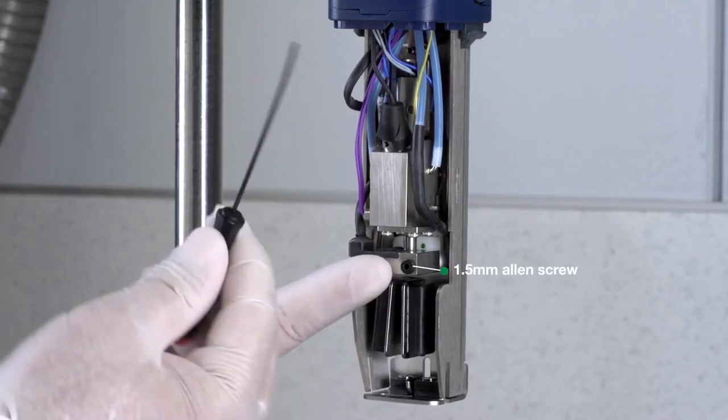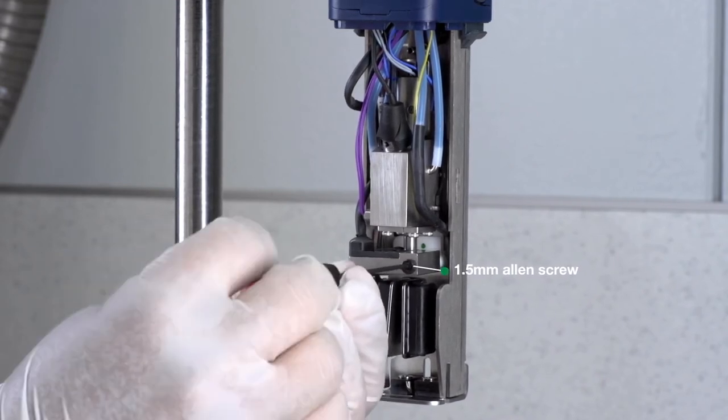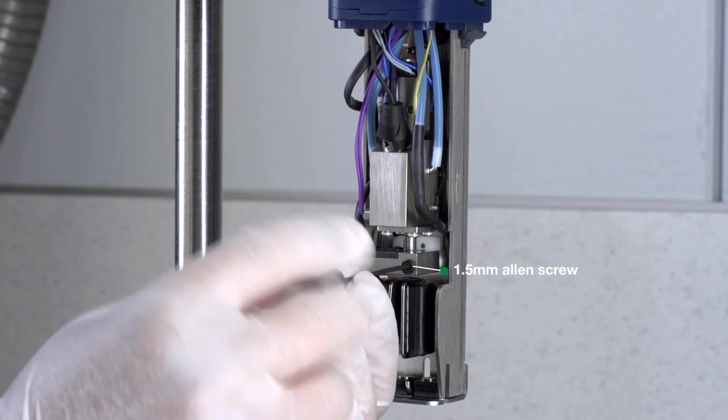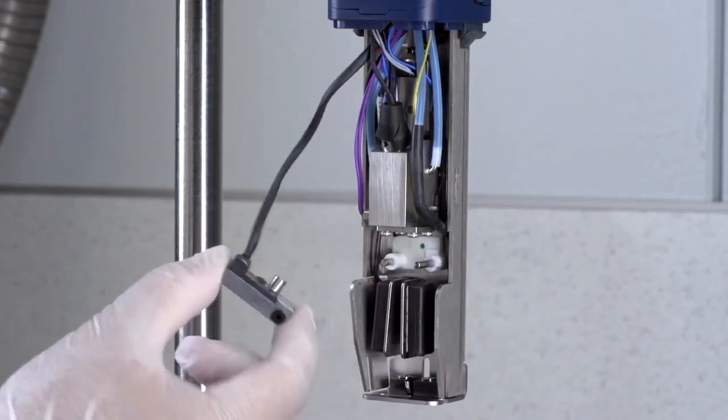Now remove the charge electrode by unscrewing the 1.5mm allen screw on the right-hand side. Carefully slide the charge electrode out of the way.